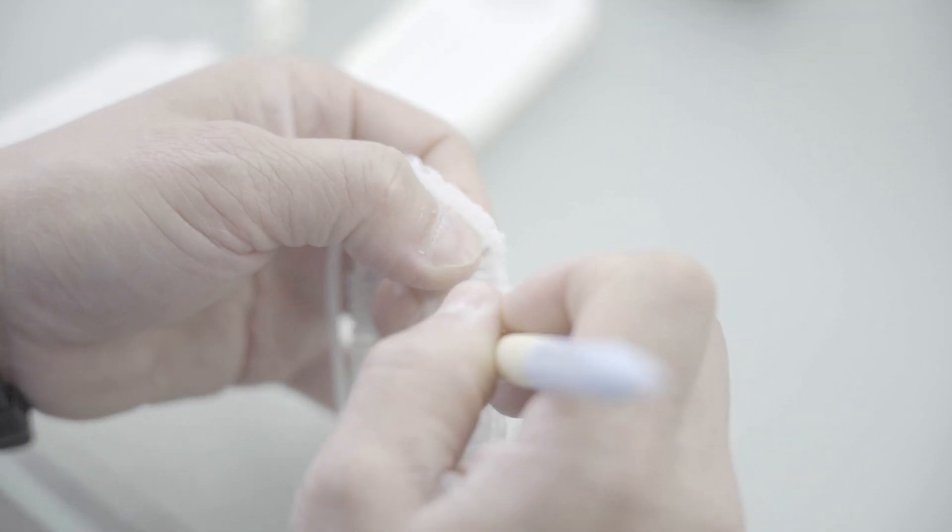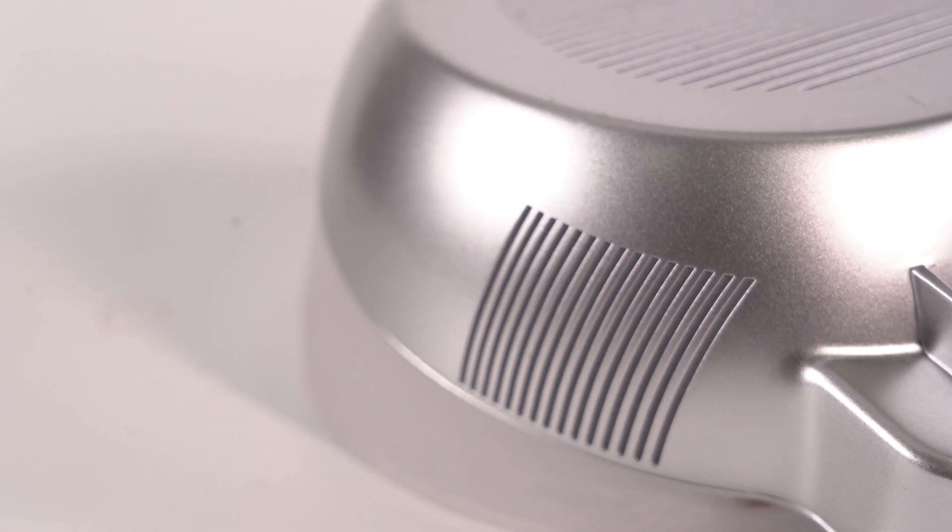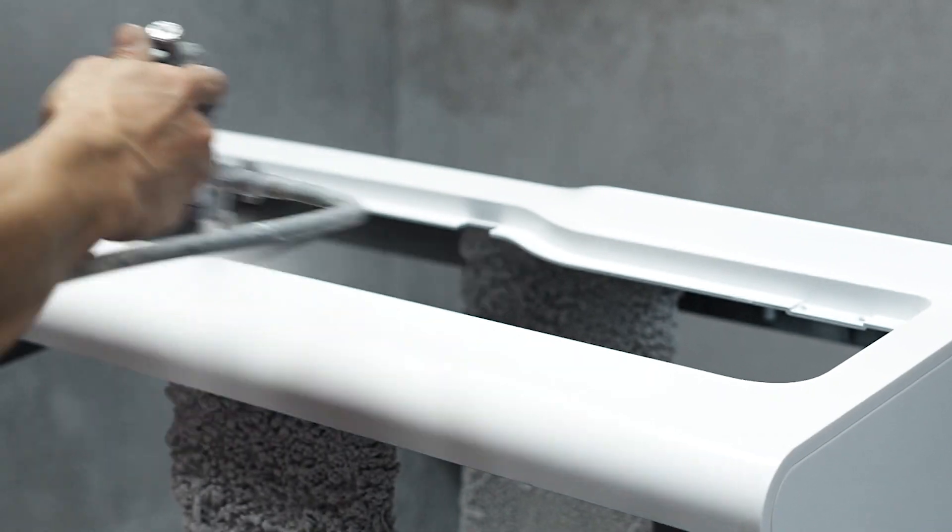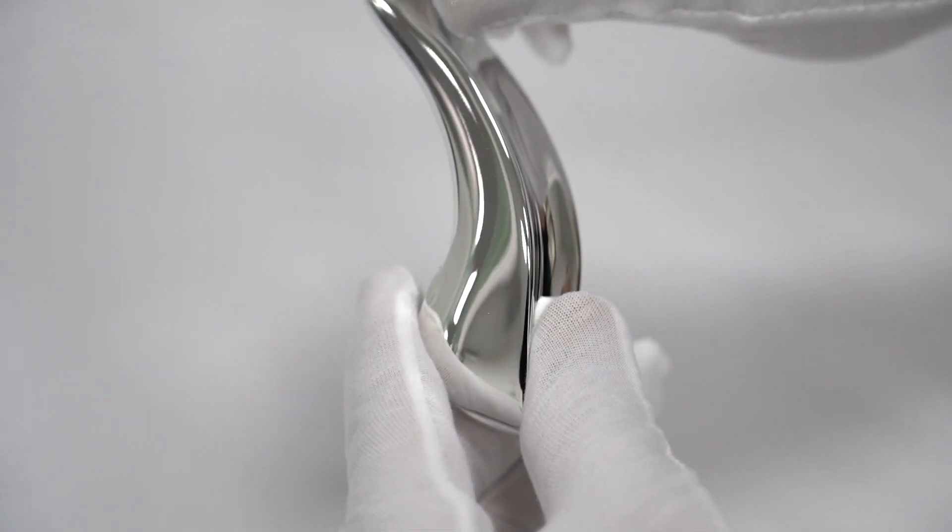SLA is one of the most versatile processes in terms of surface finishing options. We can spray paint, polish, sand, and even apply an electroplated finish to your part.